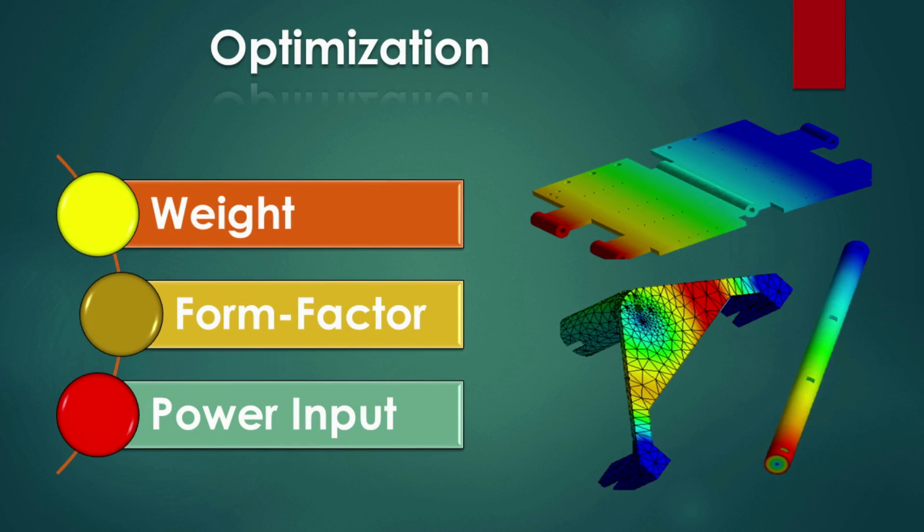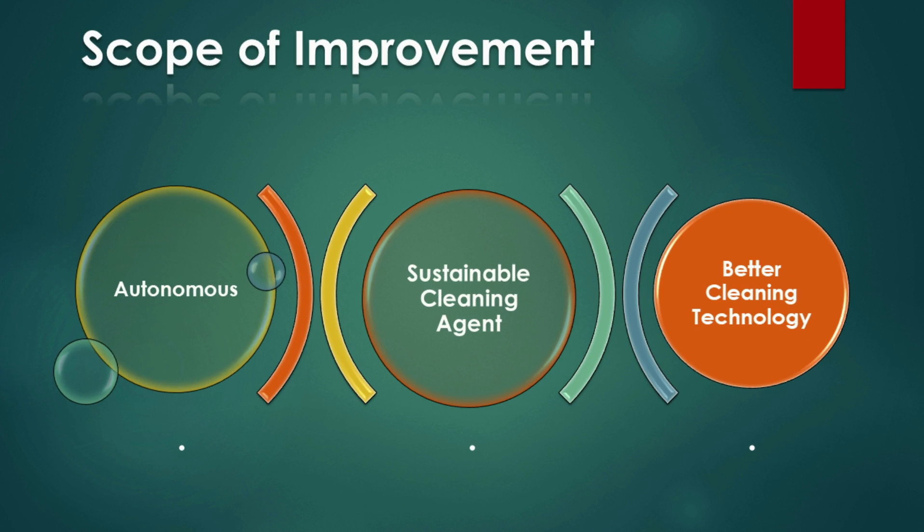We have performed static structure simulation of parts in ANSYS, which led to optimization in the mass form factor. The total electrical power required was decided upon minimum maneuverability and maximum efficiency. The following areas have the potential for further improvements. The bot can be made entirely autonomous and hands-free. Advanced materials can be used for the construction of the bot. Better cleaning technology can be explored, such as ultrasonic technology.